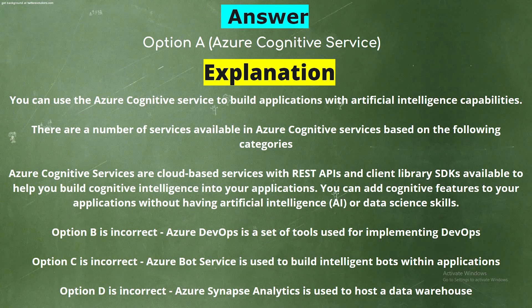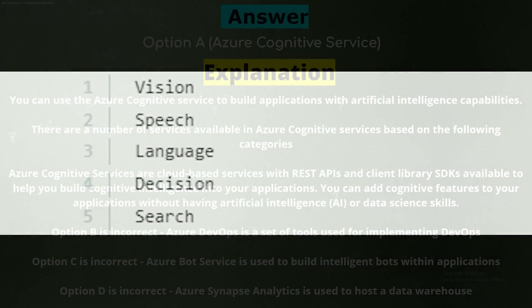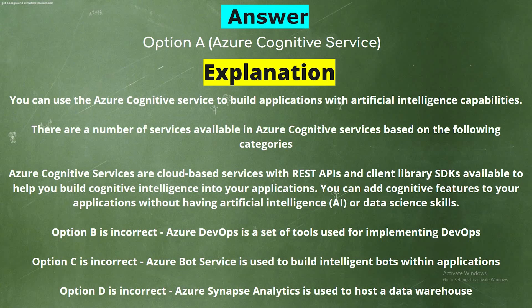Explanation: You can use Azure Cognitive Service to build applications with artificial intelligence capabilities. There are a number of services available in Azure Cognitive Services. These are cloud-based services with REST APIs and client library SDKs available to help you build cognitive intelligence into your applications without having AI or data science skills.